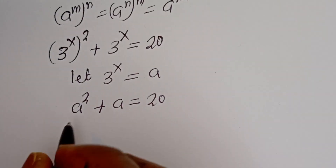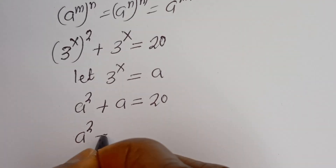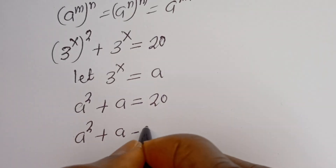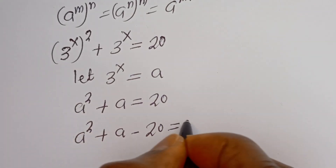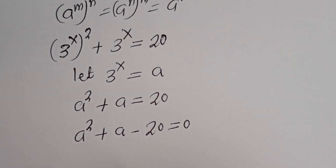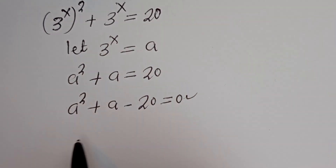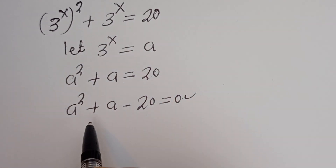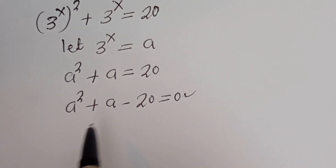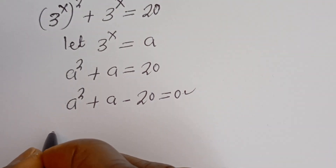Now we have a squared plus a is equal to 20. Then we have a squared plus a minus 20 is equal to 0. Now this is a quadratic equation. We can use either the factorization method or the quadratic general formula, but let's make use of the quadratic general formula.